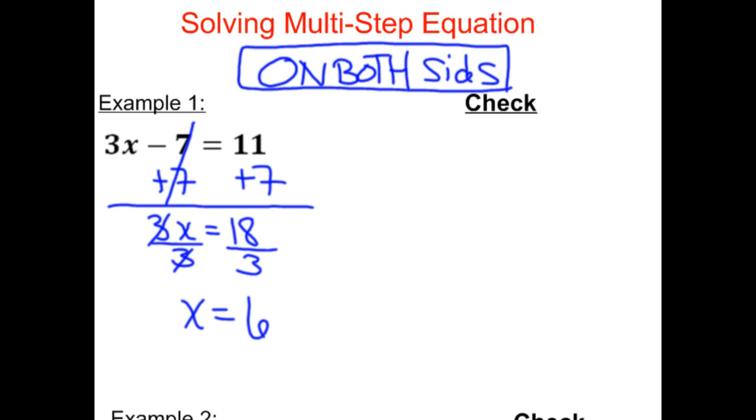So now we're going to check it to make sure that it's actually correct. So we're going to plug the 6 back into the equation and see what happens. So that would give me 3 times 6, I'm plugging 6 in for x, minus 7. 3 times 6 is 18. 18 minus 7 is, in fact, 11. And so it checks. We're good to go.